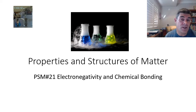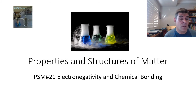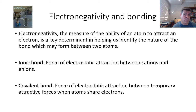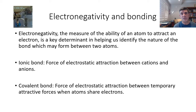Hi students, welcome to Year 11 Chemistry and the Properties and Structures of Matter video series. This is number 21 on electronegativity and chemical bonding. We've been looking at the different types of trends and patterns in how elements behave chemically and in their properties on the periodic table. Now we want to take one of those properties and see if it can help us explain the structure of different types of substances and how they bond together.